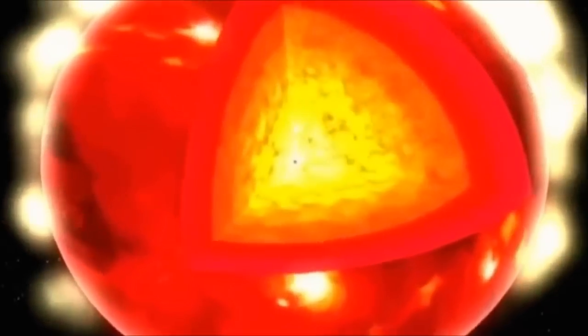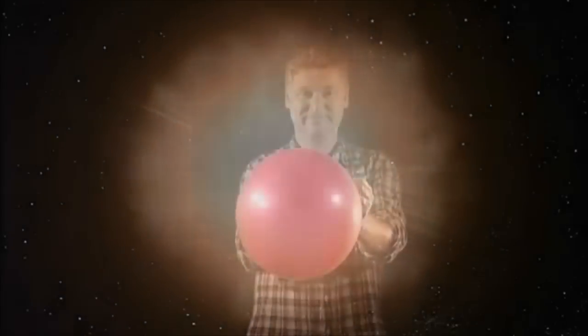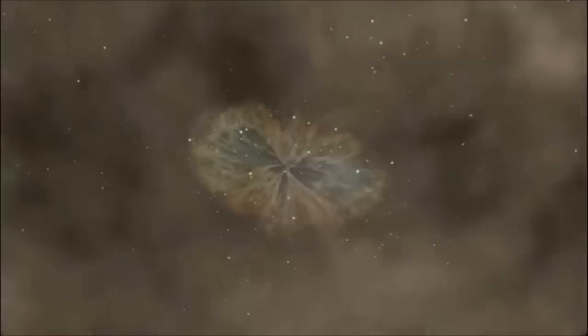And once we've formed an iron core, there's no more energy can be got from fusion. That core collapses. The rest of the star starts to collapse in after it, but then it bounces off. There's a huge shockwave, and in just a second, bang, the outer parts of the star are blasted off into space in a huge supernova explosion.